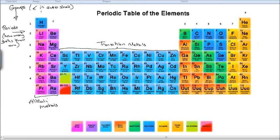Let's have a look at the yellows over here. The yellow group here are called the halogens. The halogens have got very special sets of properties related to their structure, and that's why they're grouped together. Fluorine, chlorine, bromine, and iodine — they react in very similar ways. They're called the halogens.